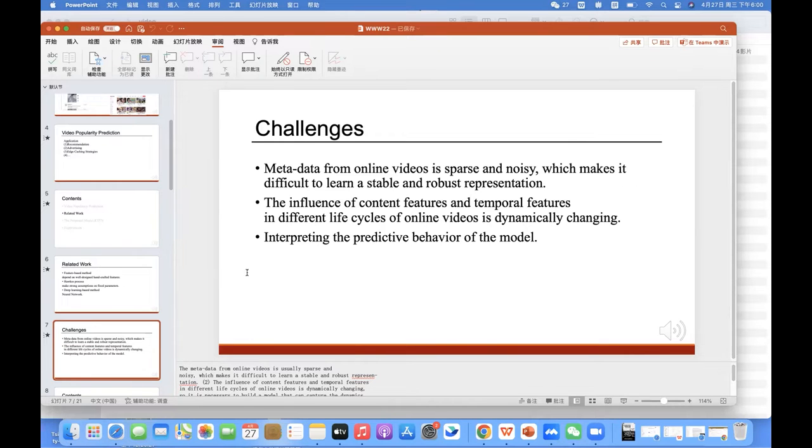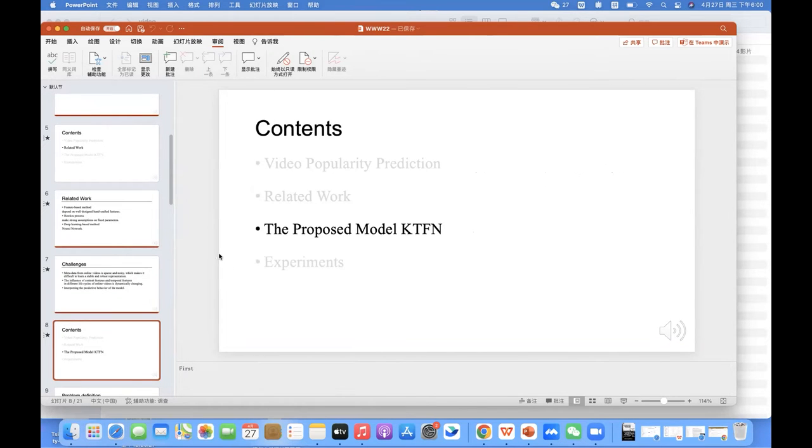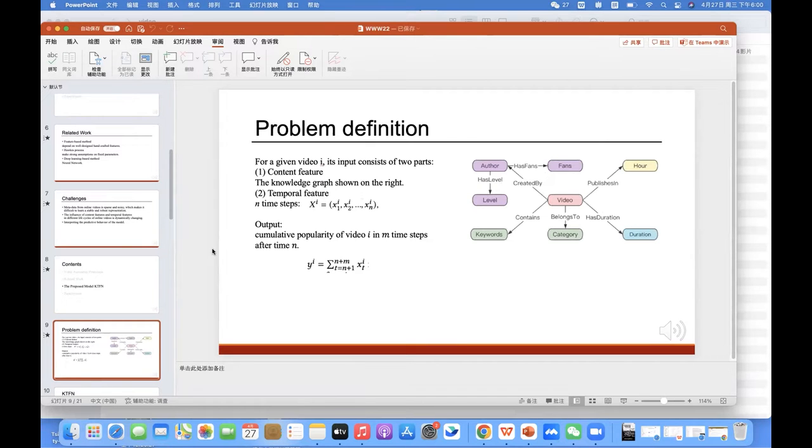To address these challenges, we propose the knowledge-based temporal fusion network. We regard the knowledge graph-based online video popularity prediction task as a regression problem. The input consists of two parts. One, the content feature. It is a knowledge graph consisting of content features and their relationships. And another is the temporal feature in time steps of time series data. The output is the cumulative popularity of video i in m time steps after time m.